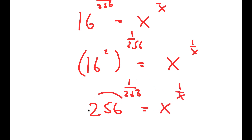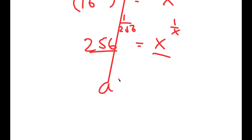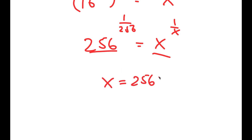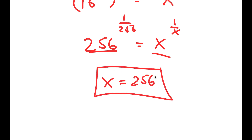Notice that these numbers are now the same. This is in the form a to the power of 1 over a is equal to b to the power of 1 over b, meaning a is equal to b. So x is equal to 256 — that's my solution to this equation. If you haven't already, please make sure to subscribe, leave a like, and share this with any of your friends or family.